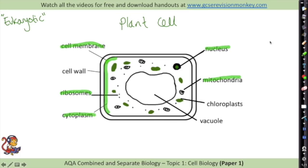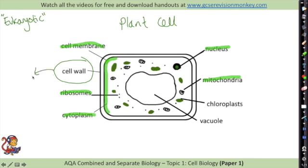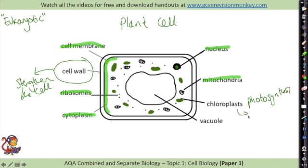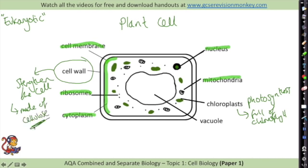But you'll notice that there are three extra things that a plant cell has. It has a cell wall to strengthen the cell. It has chloroplasts which are these parts here for photosynthesis - these are filled with a green pigment called chlorophyll which absorbs the sunlight. You might also see the word cellulose - that's what the cell wall is made up of.